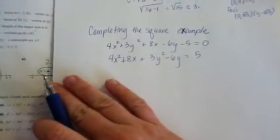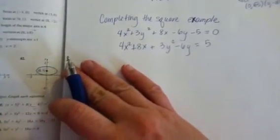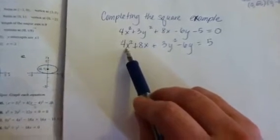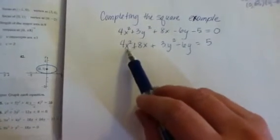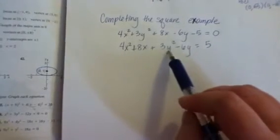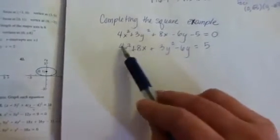Now notice how this time I didn't actually leave room for the completing the square. That's because there's another step that needs done first. I cannot complete the square unless the coefficient in front of the x squared and the y squared is 1. So we have to factor out this 4 and this 3 first.